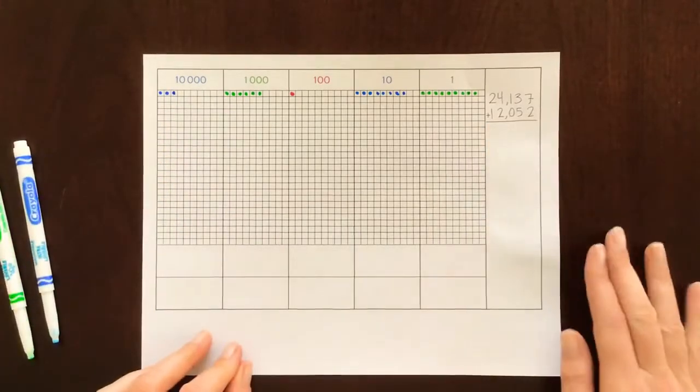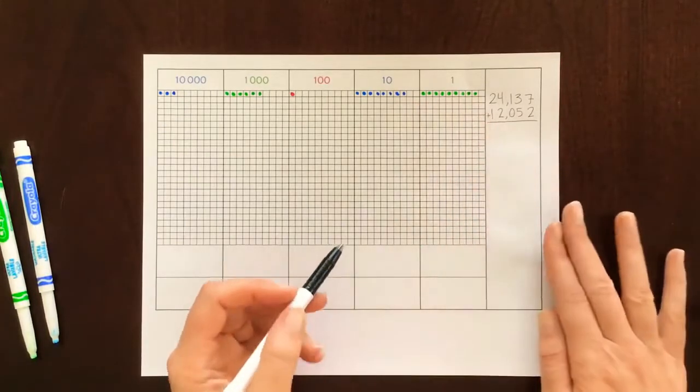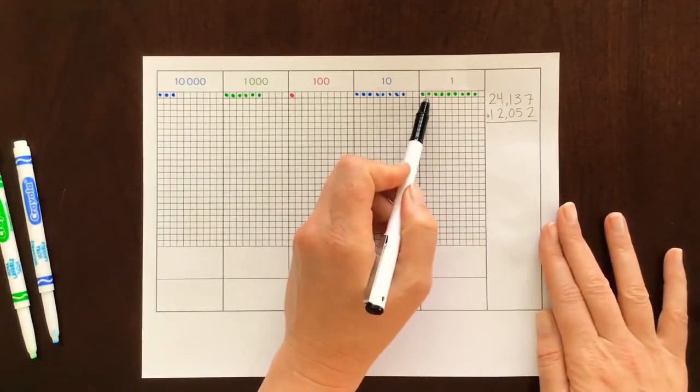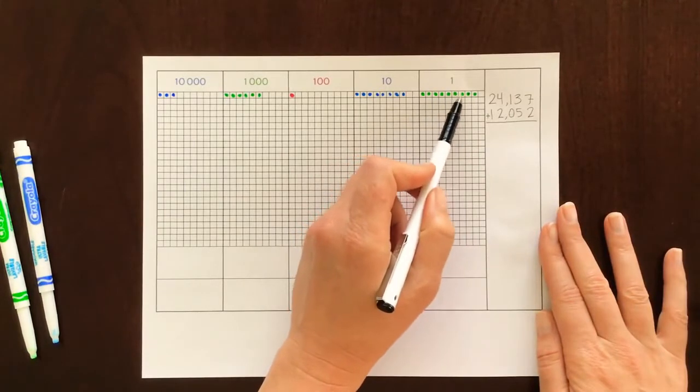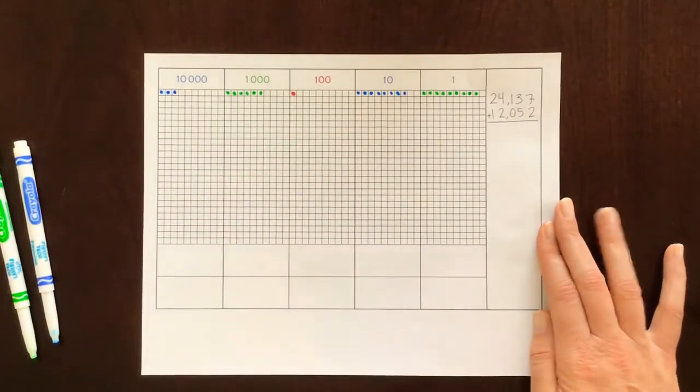Okay so to find our answer we're going to go back and count all of our dots in the ones place. One, two, three, four, five, six, seven, eight, nine. And I'll write my answer here.